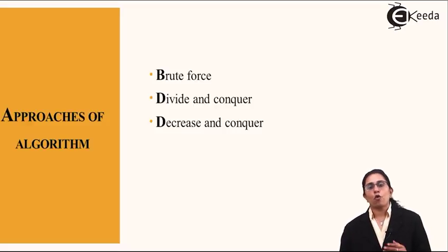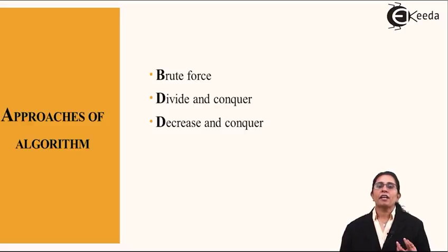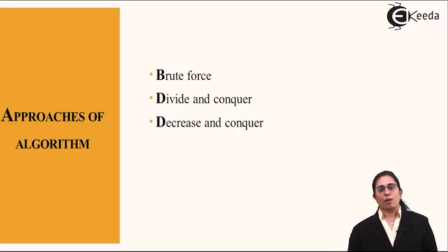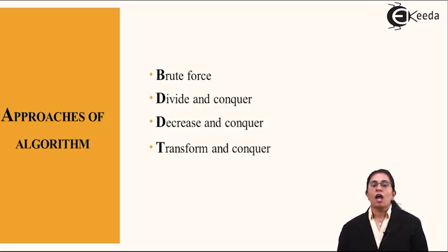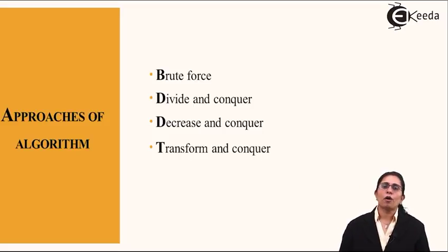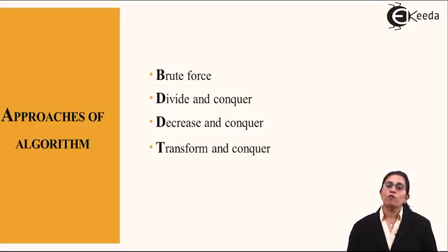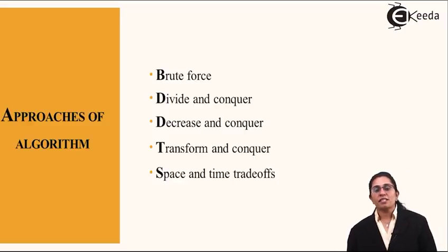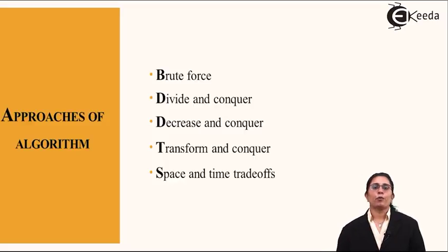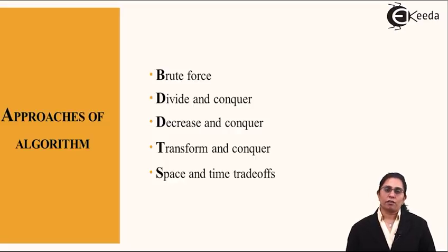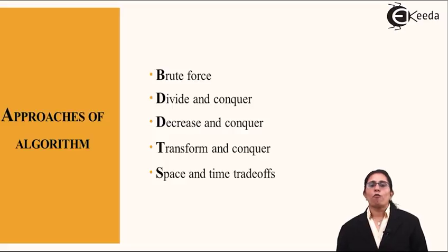The next method is decrease and conquer, similar to divide and conquer, where I reduce programming complexity by taking an input and output for a function, decreasing the complexity of the program to solve the problem. Transform and conquer is a fourth approach — I can transform my algorithm into different approaches, whether top-down or bottom-up, transforming from one logical reasoning to another to solve an issue. Space and time trade-offs are very important: if the time factor is not considered, my code can run for a longer time, wasting the space and time of the processing unit.